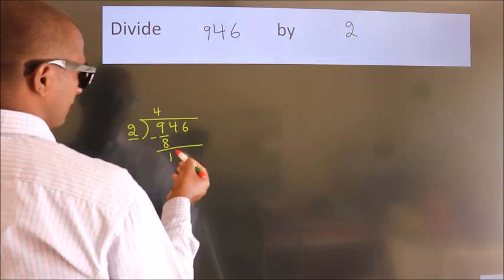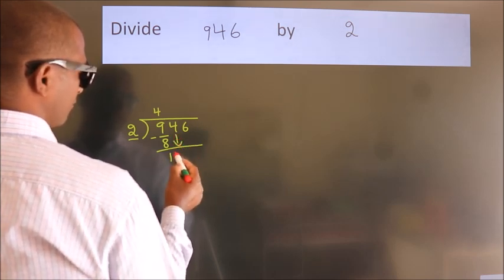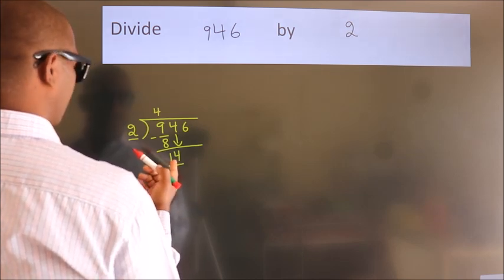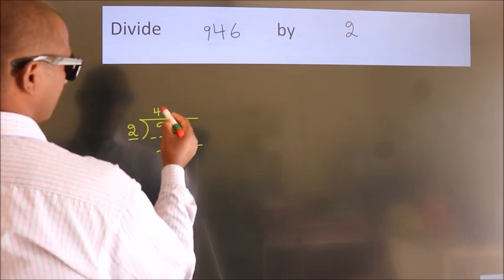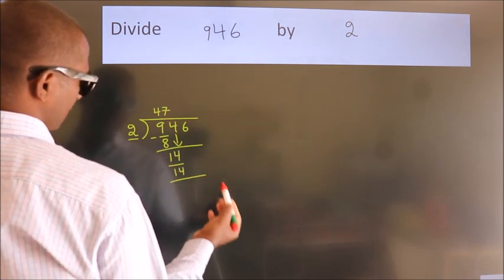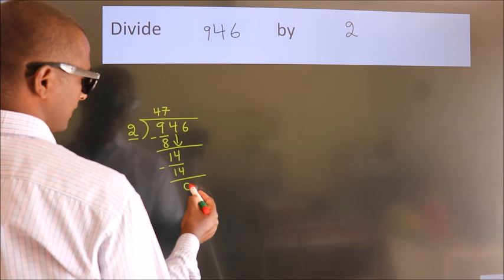After this, bring down the beside number. So 4 down, so 14. When do we get 14? In 2 table, 2 7s 14. Now we subtract. We get 0.